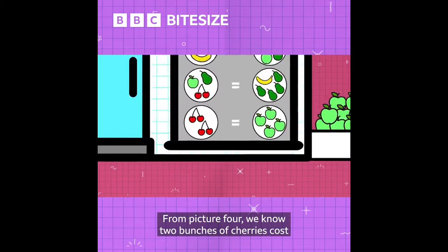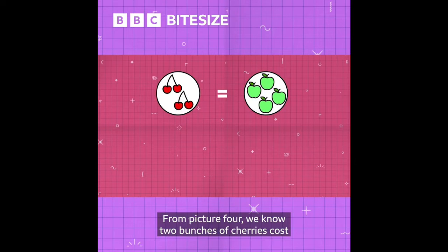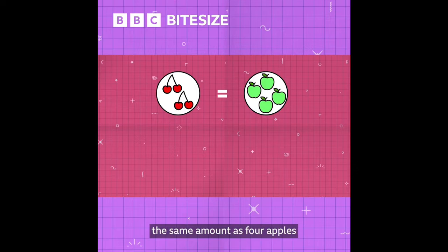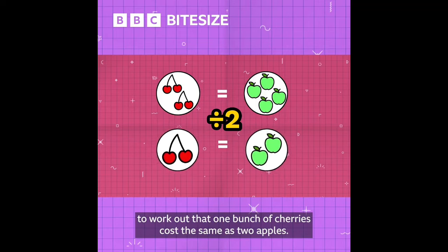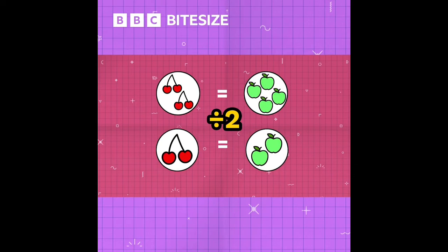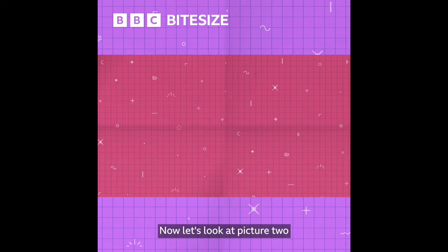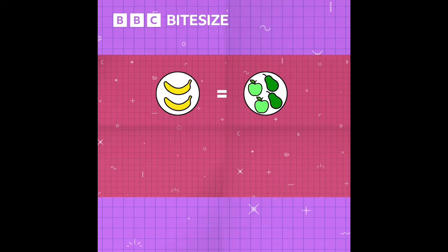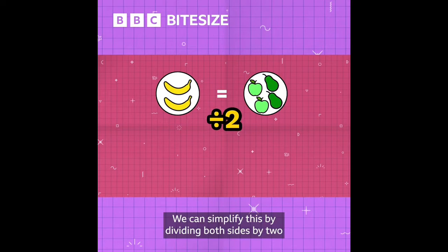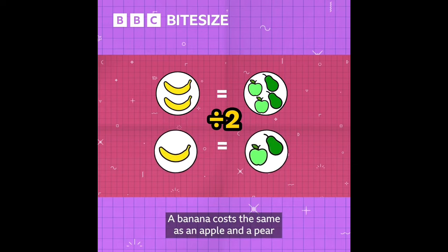We know two bunches of cherries cost the same amount as four apples. We can simplify this by dividing both sides equally to work out that one bunch of cherries costs the same as two apples. Now let's look at picture two: two bananas cost the same as two apples and two pears. We can simplify this by dividing both sides by two — a banana costs the same as an apple and a pear.